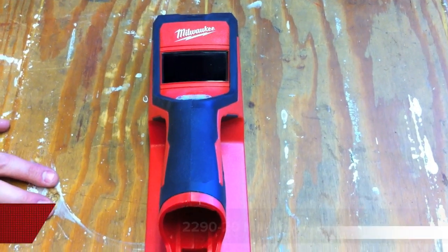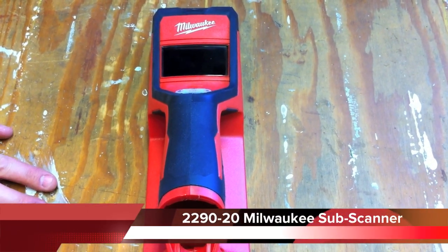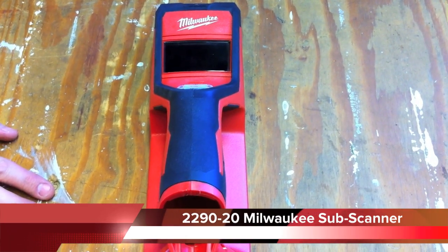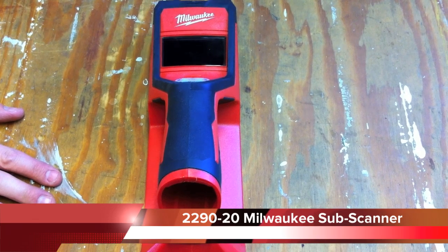Hey guys, Dan with Tools in Action. Today we're really excited. We're going over the Milwaukee Sub Scanner, the M12 Cordless Detection Tool, model number 2290-20.